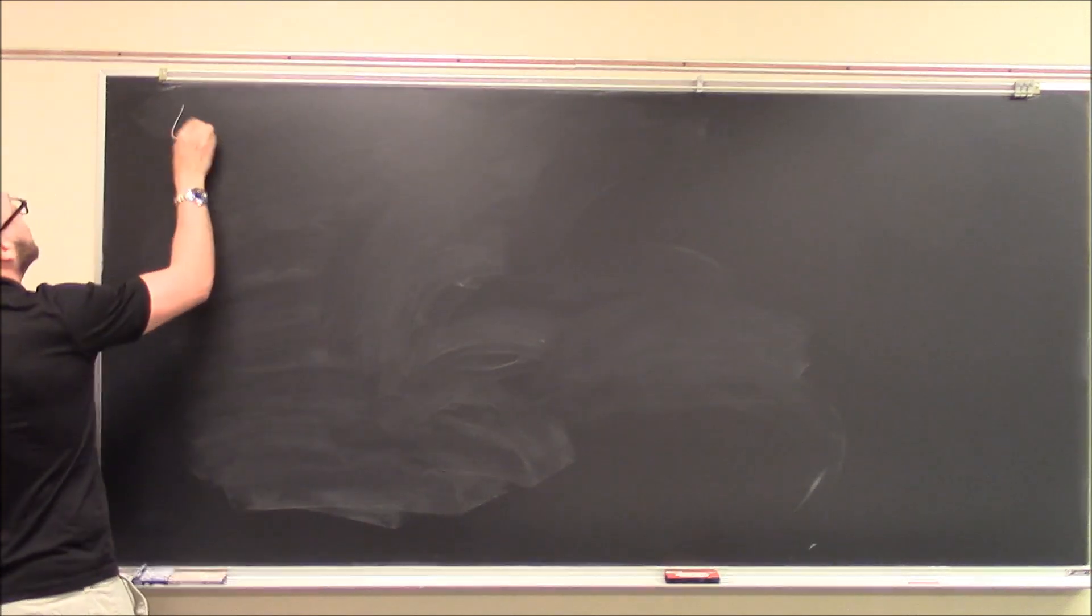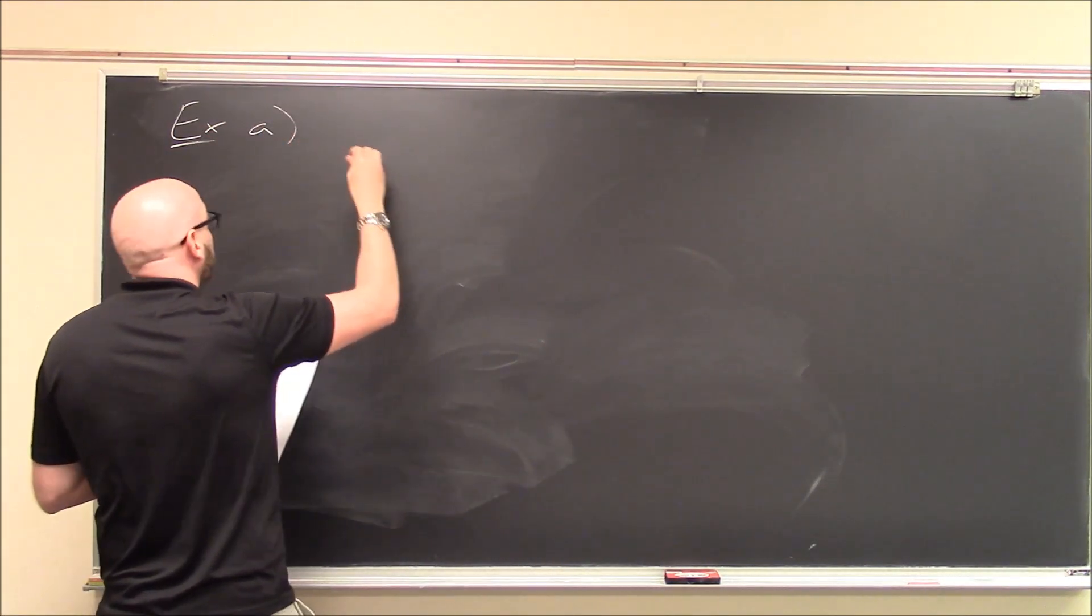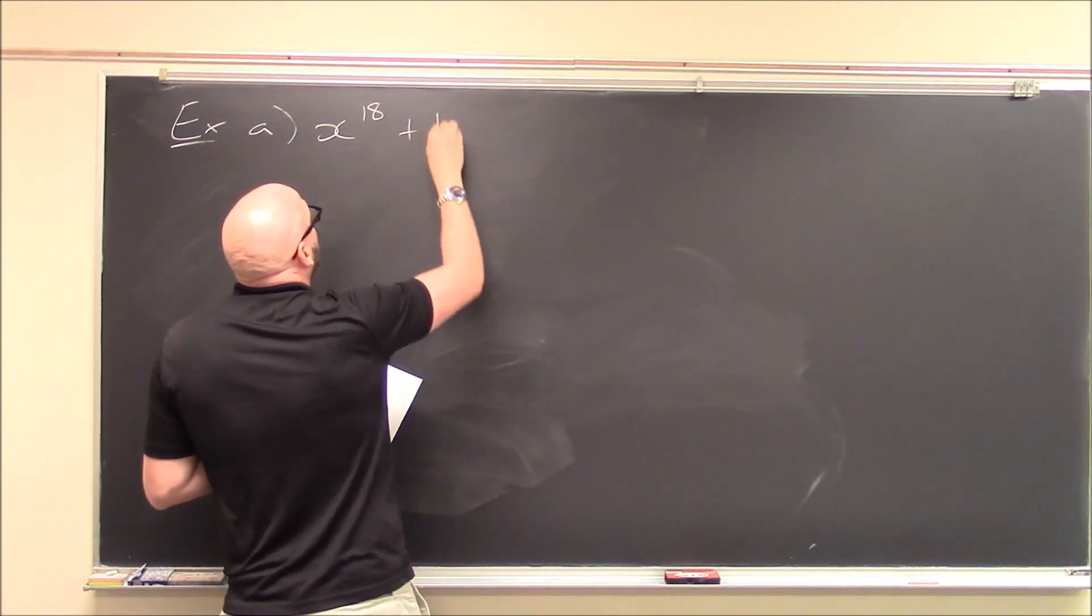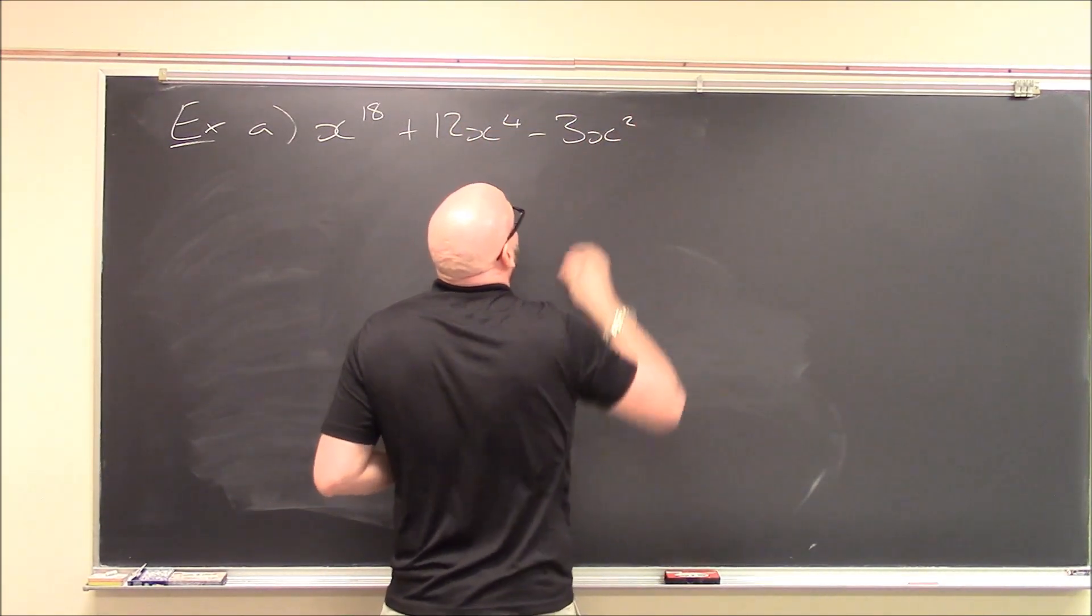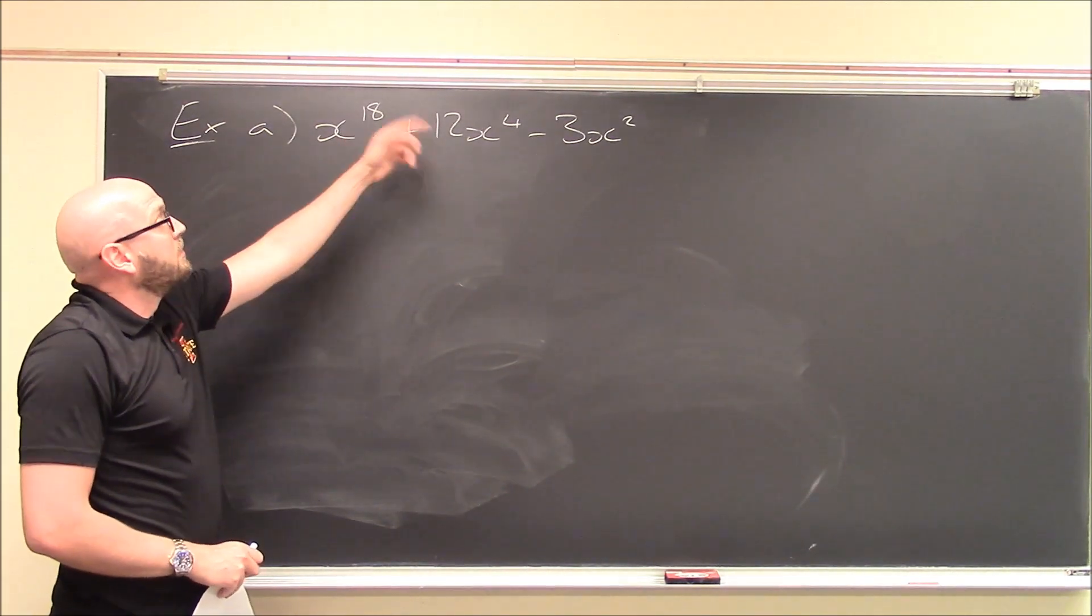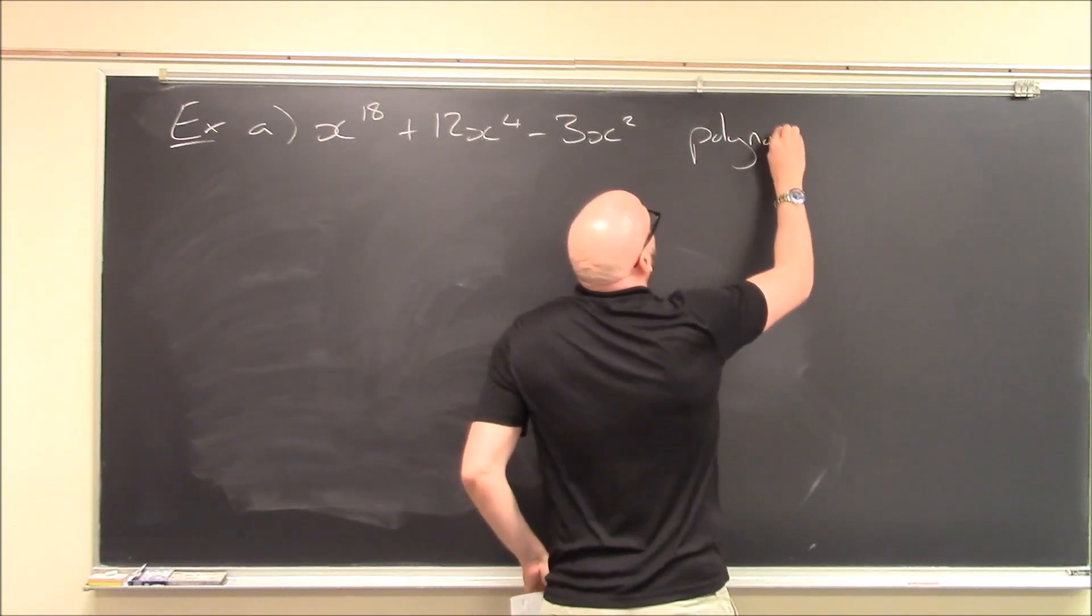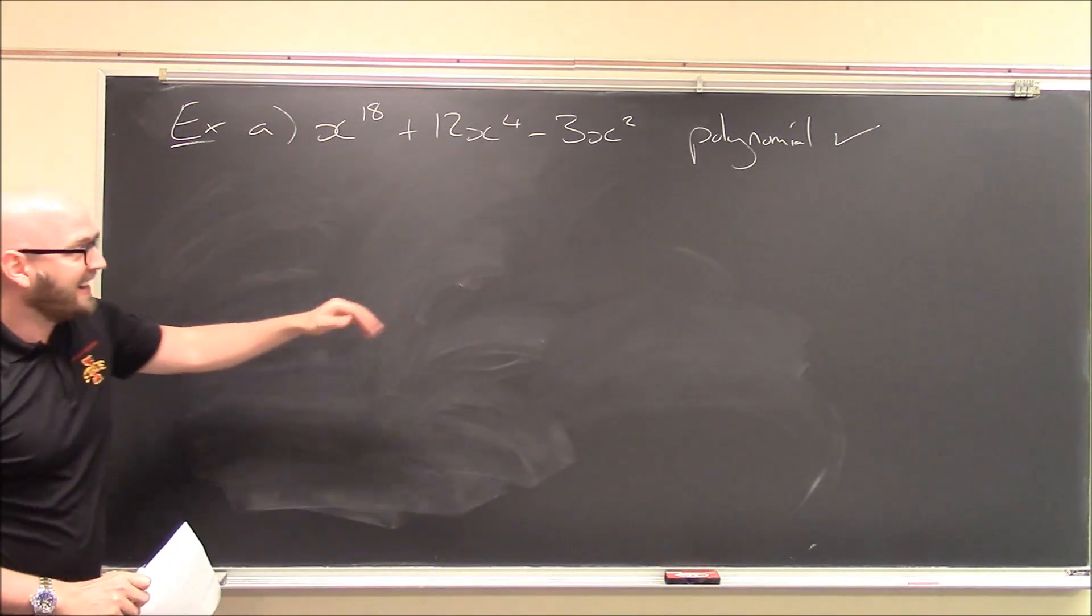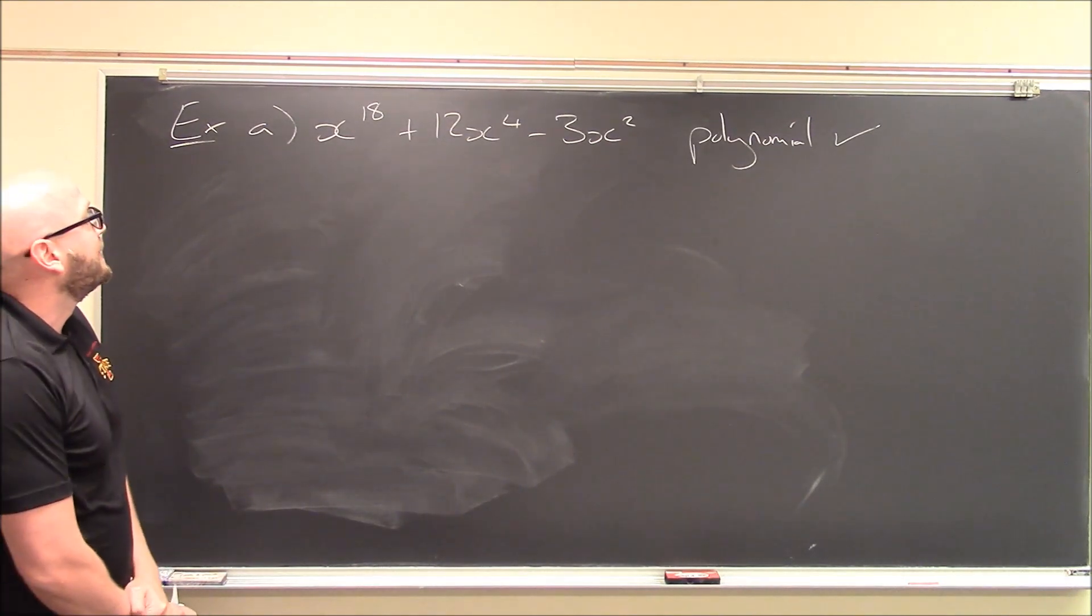All right, here's a few more examples. Let's see. A. We'll do x to the power 18 plus 12x to the 4th minus 3x squared. All right, there's a sum of a bunch of terms. My exponents are always whole numbers and never negative. So this is indeed a polynomial. I said never non-negative. That's too many negations there. Never negative. So yeah, all of those are positive numbers.